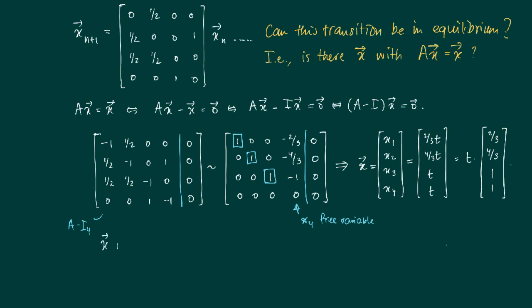Well we know that X is a distribution vector, so the sum of the coordinates should be one. X_1 plus X_2 plus X_3 plus X_4 should be equal to one, from which we get that t is one-fourth, so that we end up with the distribution vector [1/6, 1/3, 1/4, 1/4].